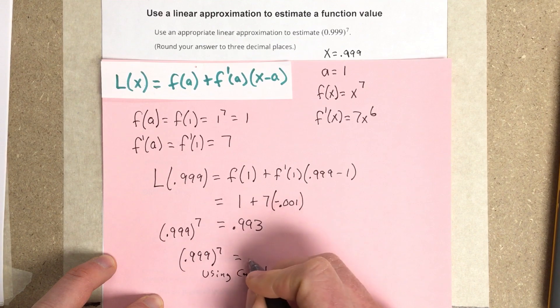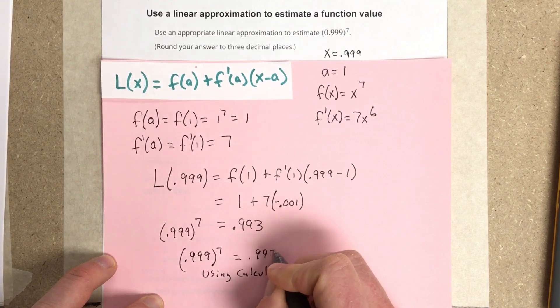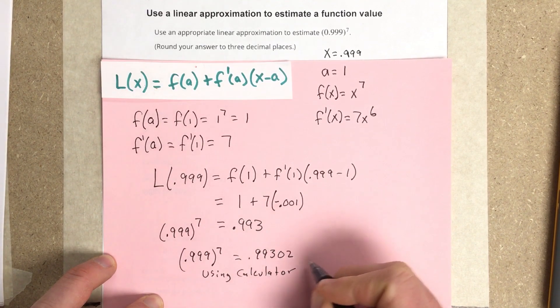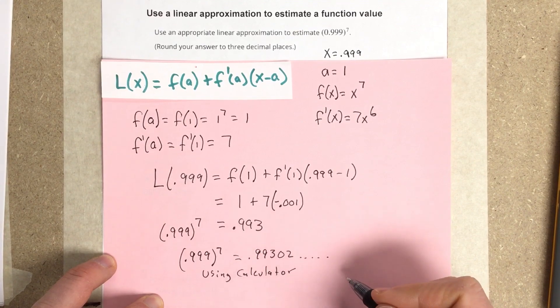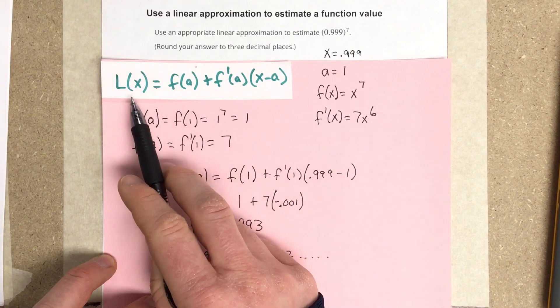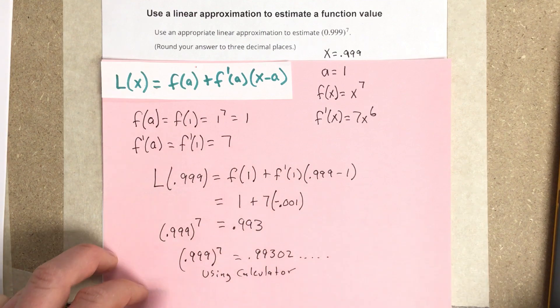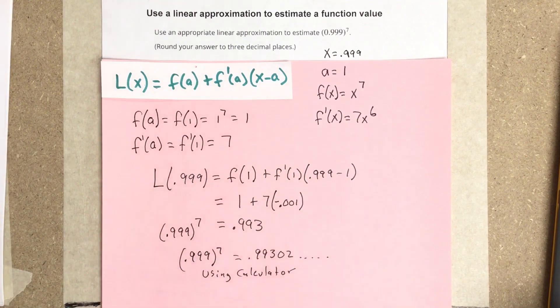I end up with 0.993 dot dot dot. So you can see it's pretty close to this. And remember, this linearization equation comes from the tangent line, the equation for the tangent line.